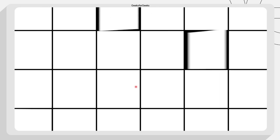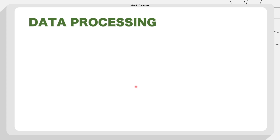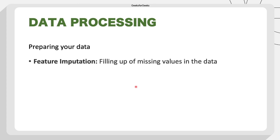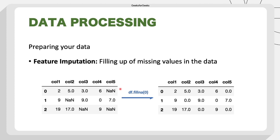The next step is treating our data through a data processing path. First, we do feature imputation — we fill up the missing values in the data. As you can see in this example, there are null values, so we have to treat this data. We can't feed it directly to a machine learning model because of these missing values. We can fill them with zero, mean, or median values.